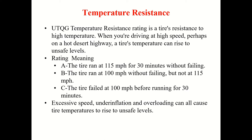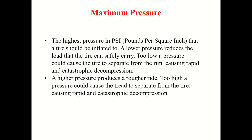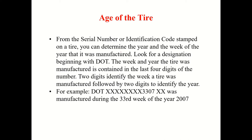For temperature resistance there is also an A, B, C rating. A means the tire ran at 115 miles per hour for 30 minutes without failing. B means the tire ran at 100 miles per hour without failing but not at 115. C means the tire failed before running for 30 minutes at 100 miles per hour. Maximum pressure is the highest pressure in PSI the tire should be inflated to — too low a pressure could cause the tire to separate from the rim causing rapid and catastrophic decompression, while too high a pressure produces a rougher ride and could cause the tread to separate.